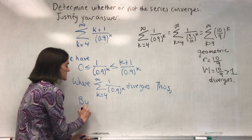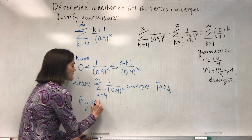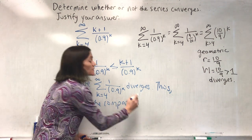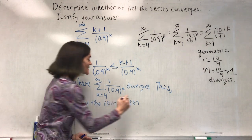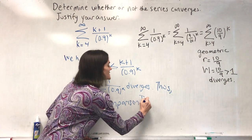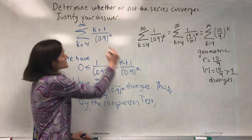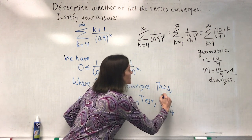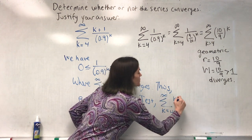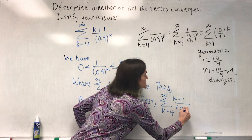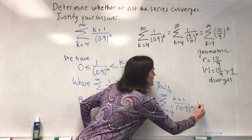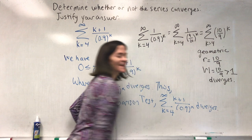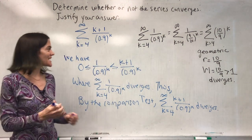By the comparison test, this series is bigger than something divergent, which means our series diverges. The sum from k equals four to infinity of k plus one over 0.9 to the k diverges. This is using the comparison test.